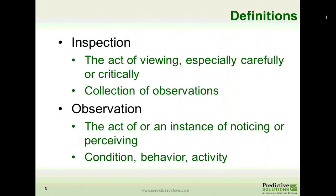I want to cover a couple definitions. First, an inspection is the act of viewing, especially carefully or critically. Within Safety Net, an inspection is a collection of individual observations. An observation is the act or an instance of noticing or perceiving. It can be an individual condition, behavior, or activity as it relates to Safety Net.